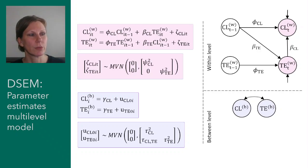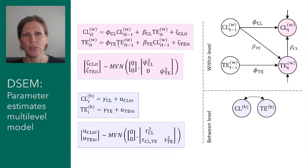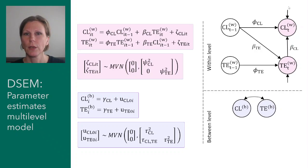Closeness today is also regressed on closeness yesterday (t minus one), and tension today is regressed on tension yesterday but also on closeness yesterday. We can represent these relationships using regression equations: closeness at the current occasion is regressed on closeness at the previous occasion and tension at the current occasion — the auto-regressive relationship and the cross-lagged regression. Tension is also regressed on tension and closeness from yesterday.